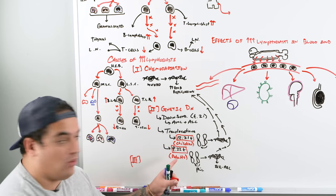The third reason is specific to T-cell ALL: infection with the human T-lymphotropic virus (HTLV). HTLV is primarily associated with T-cell ALL only. B-cell ALL accounts for about 80% of cases, while T-cell ALL accounts for about 20%. If you see T-cell ALL, think HTLV.